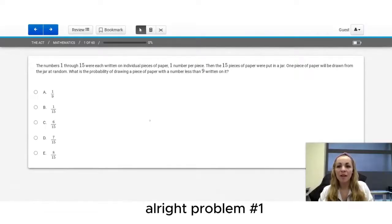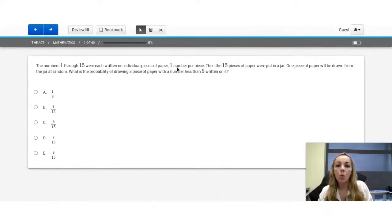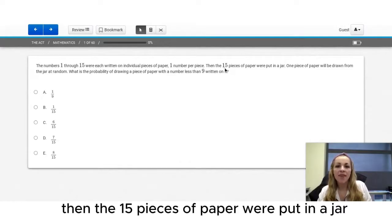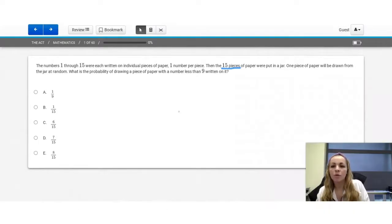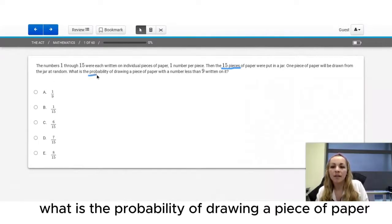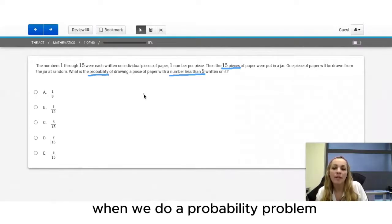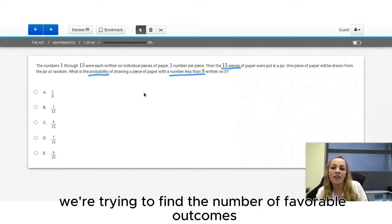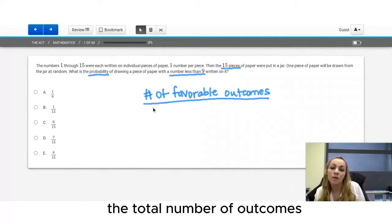Problem number one. The numbers 1 through 15 were each written on individual pieces of paper, one number per piece. Then the 15 pieces of paper were put in a jar. One piece of paper will be drawn from the jar at random. What is the probability of drawing a piece of paper with a number less than 9 on it? When we do a probability problem, we're trying to find the number of favorable outcomes over the total number of outcomes.